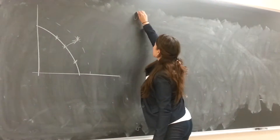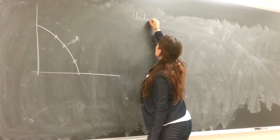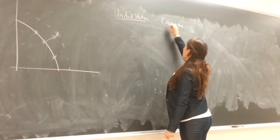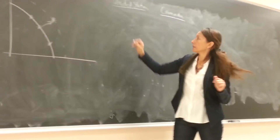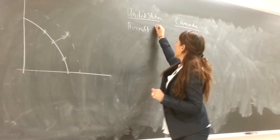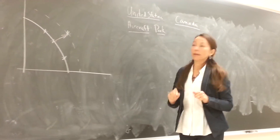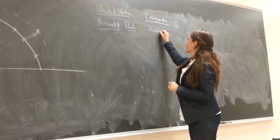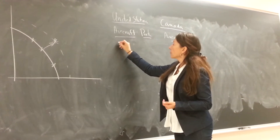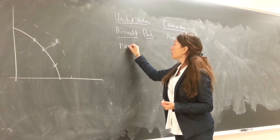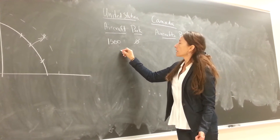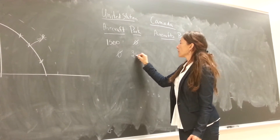We're going to take a look at two countries: the United States and Canada. I'm going to assume that these countries can produce only two items — they can produce aircrafts and pork. The United States can produce 1,500 aircrafts or zero pounds of pork, or alternatively zero aircrafts and 3,000 pounds of pork.